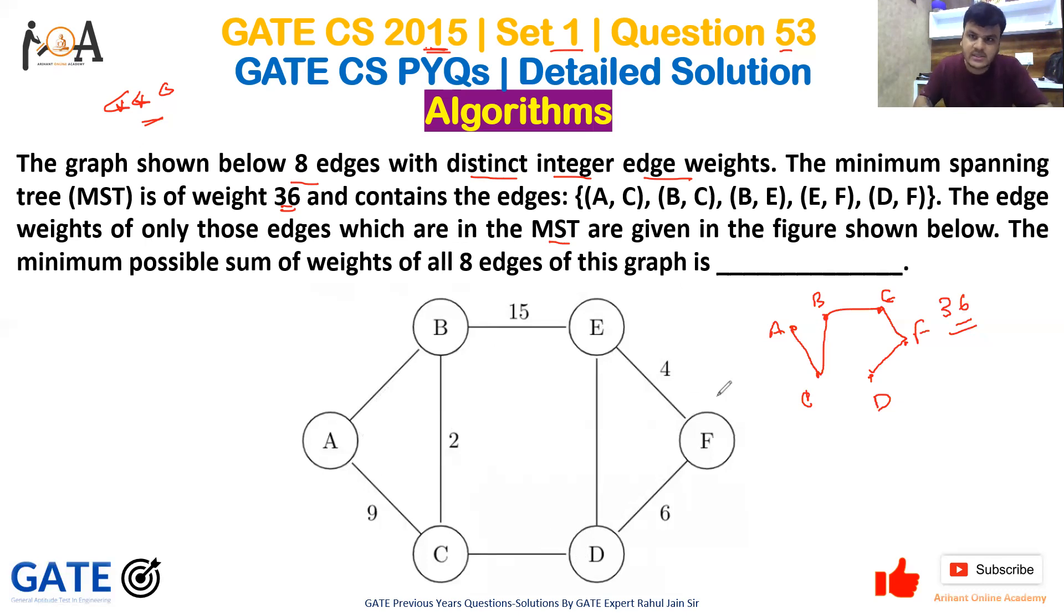The question is: what is the minimum possible sum of weights of all eight edges? Just use common sense. In MST, we generally take the minimum possible edge from the available edges.